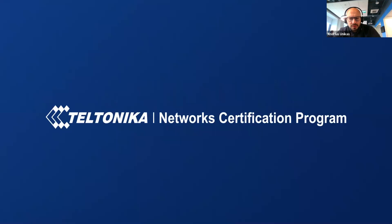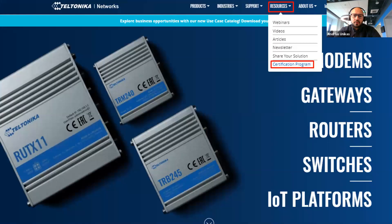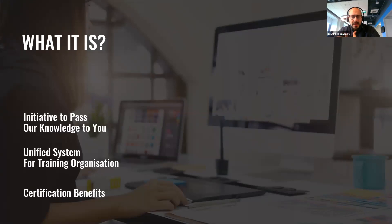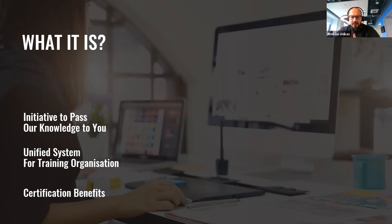The registration process is quite simple — it will work very similarly to Level 1. Just use the Teltonika Networks certification program. Information about this program you can easily find on our website: go to resources and press on certification program. The certification program is an initiative to pass our knowledge to you, our clients and potential clients. Here you will find all of our trainings — sales training, technical training Level 1, and technical training Level 2. After completing the course, you will get a certification certificate and even a badge showing that you are certified with Teltonika Networks.